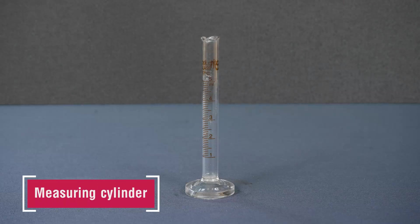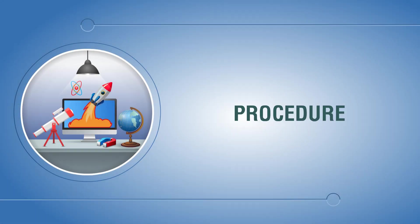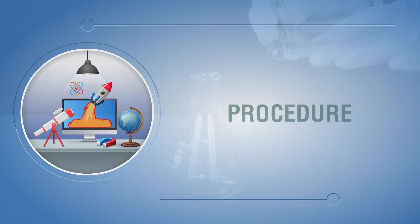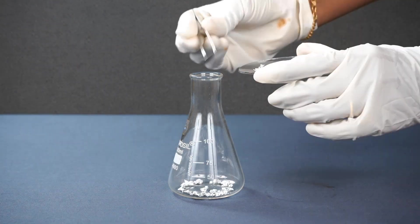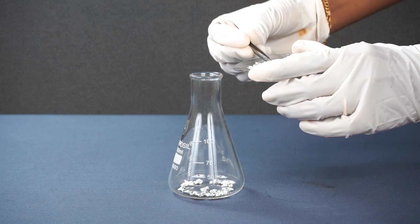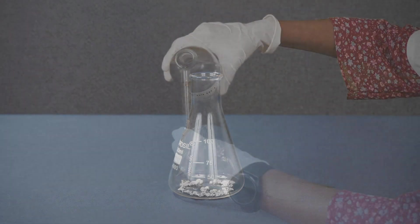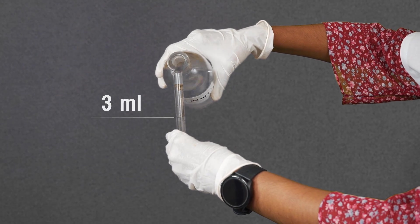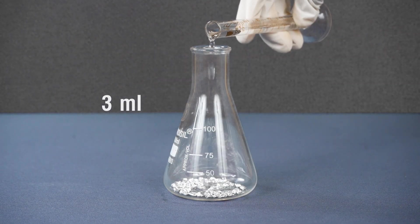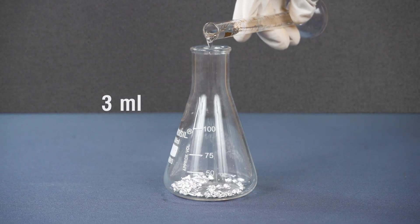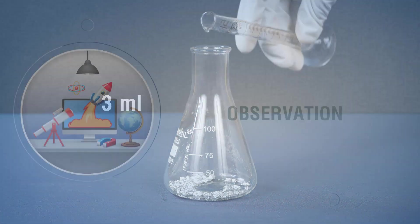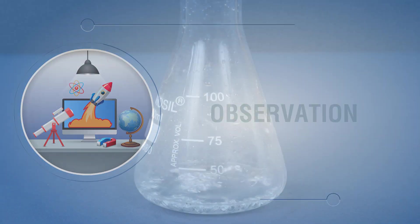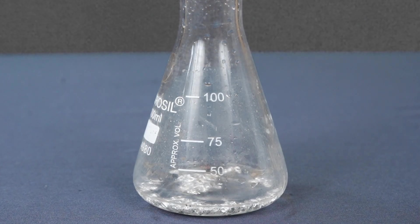Additional materials: forceps and measuring cylinder. Procedure: take a few pieces of aluminium foil in a dry conical flask using forceps. Pour 3 ml of dilute hydrochloric acid into the conical flask using a measuring cylinder.